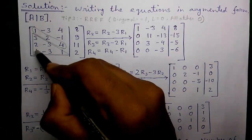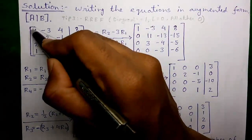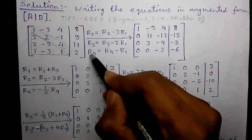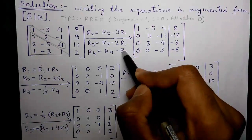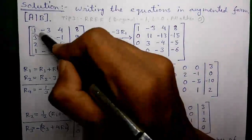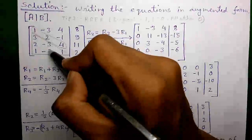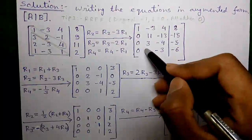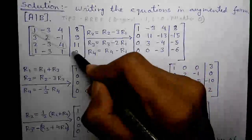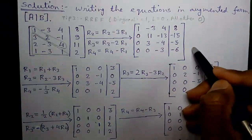Next, to get a zero at this position in row 4, we simply subtract row 1 from row 4: R4 = R4 − R1. So: 1 − 1 = 0; −3 − (−3) = 0; 1 − 4 = −3; and 2 − 8 = −6. This is our new row 4.